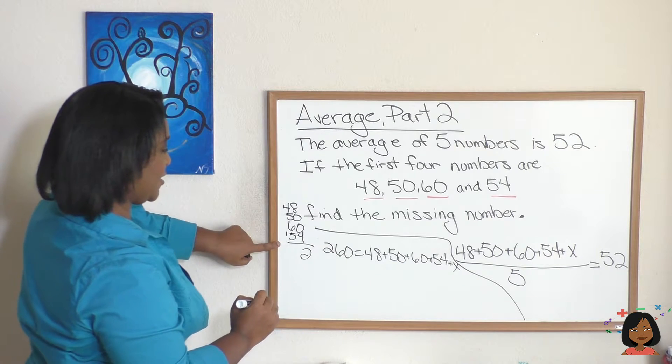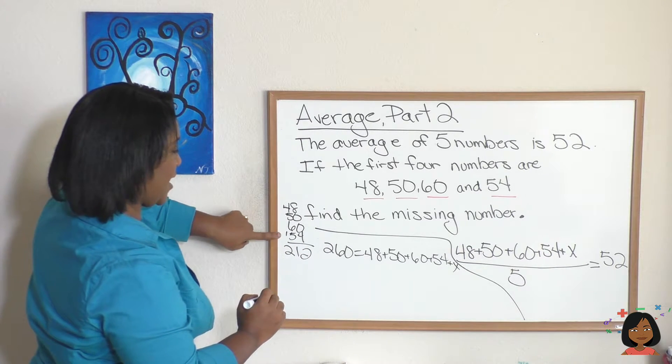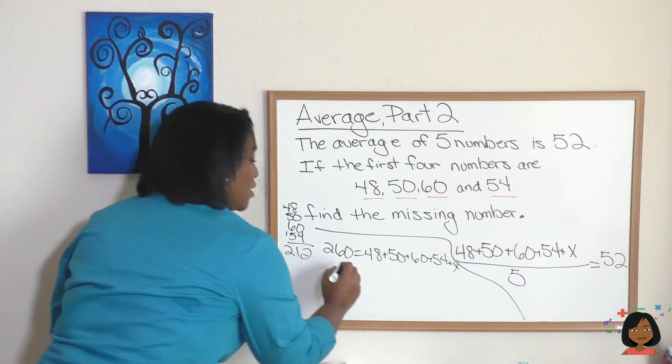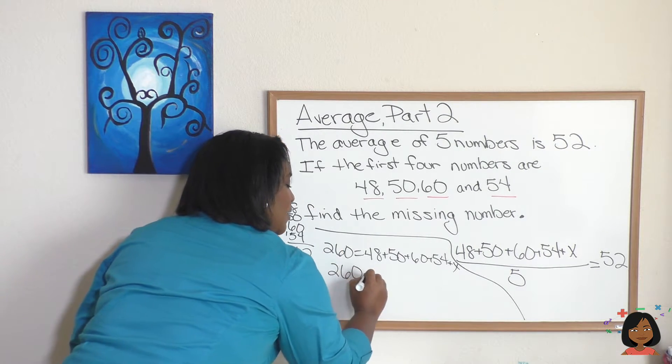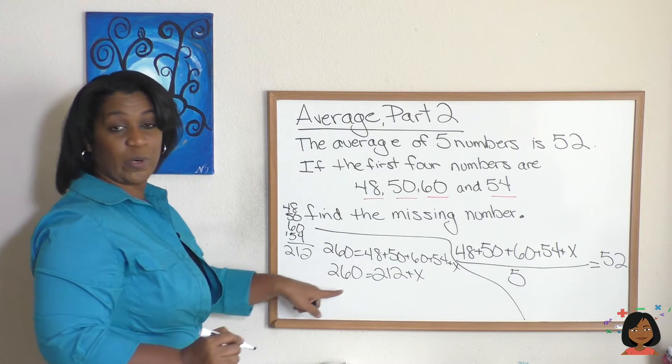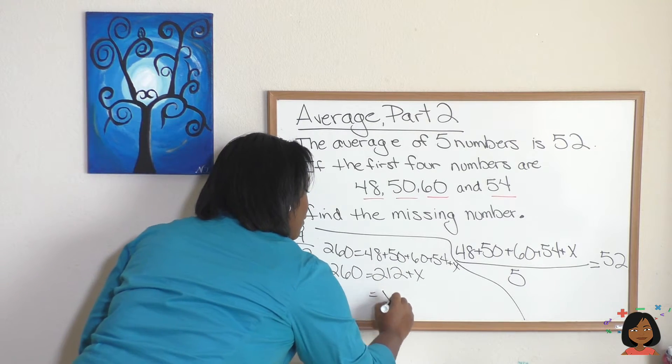48, 50, 60, 54. Five and five is ten, 12. Let's make sure that's correct. 10, 10, and okay, 212. So we have 260 equals 212 plus x. All we're going to do is subtract 212 from 260 to find our missing number.